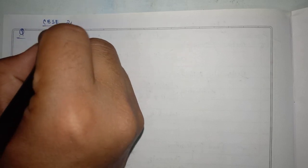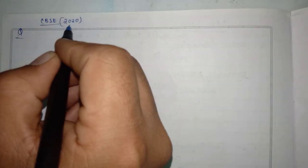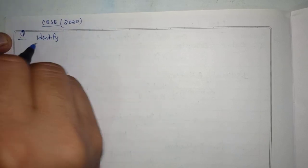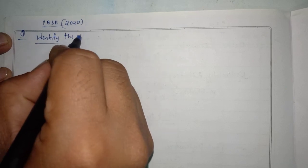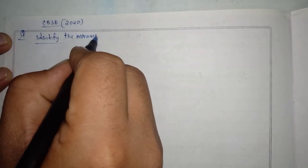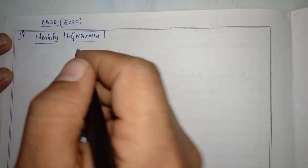Hello everyone. Let's see a question that has been asked in CBSE Chemistry in Board Examination for the year 2020. Here the question is you have to identify the monomers for the given polymer.